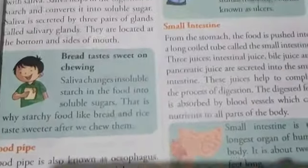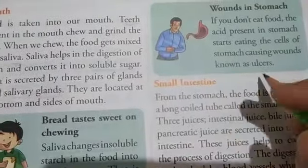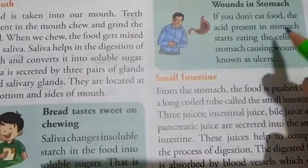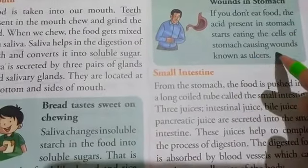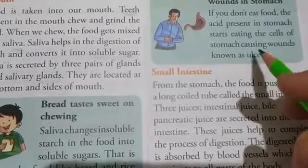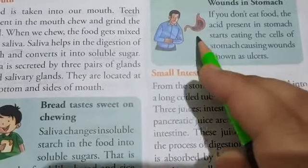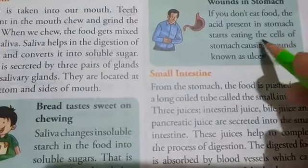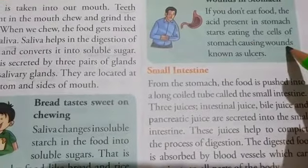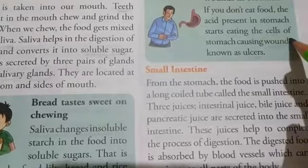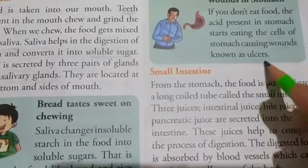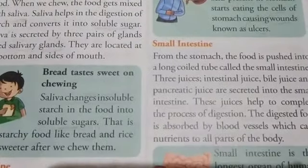Next: wounds in the stomach. Why are there wounds in the stomach, known as ulcers? If you don't eat food, the acid present in the stomach starts eating the cells of the stomach, causing wounds known as ulcers. These wounds in the stomach are known as ulcers.